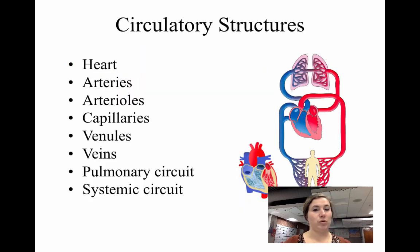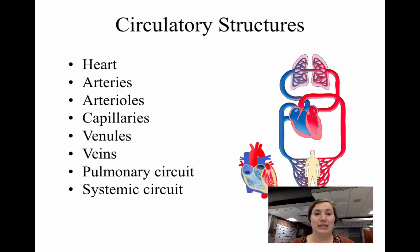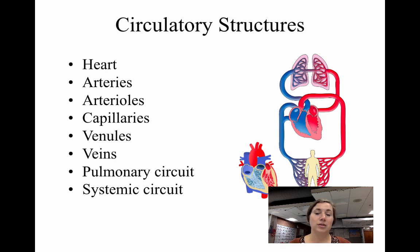For circulatory structures: arteries always carry blood away from the heart; they branch into smaller arterioles, then into capillaries, where most gas exchange and nutrient exchange occurs. Blood then returns through venules, which merge into veins, which always bring blood back to the heart. There are two circuits: the pulmonary circuit involving the lungs, and the systemic circuit involving the rest of the body.